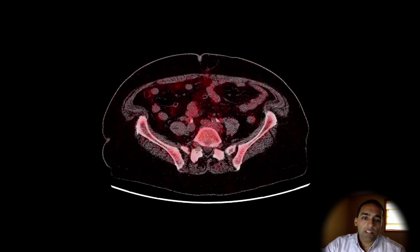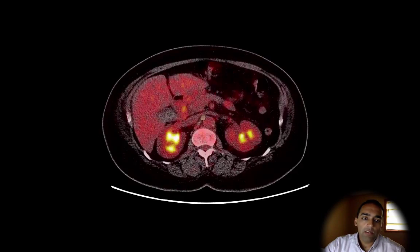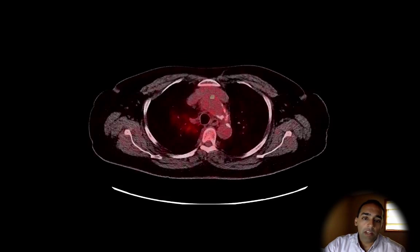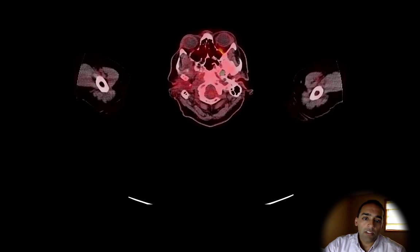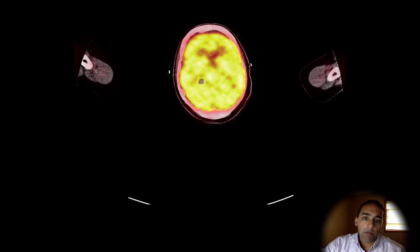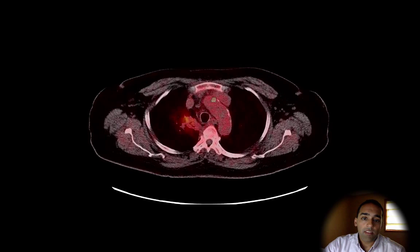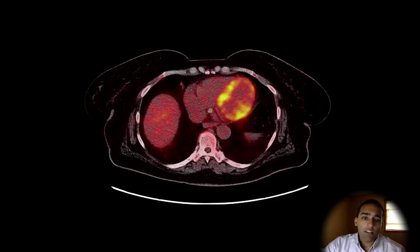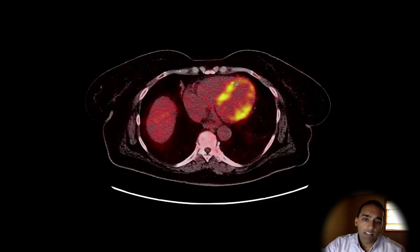So how can I double-check this scan to make sure it makes sense? As I said before, the brain always takes up a lot of glucose. So here I have the brain, and you can see it's lighting up very high, meaning it's taking up a lot of glucose, which makes sense. Another thing to look at is the heart. Here I can see that within the heart muscle, there's a lot of glucose uptake, and that makes sense because the heart never stops working, never stops pumping blood throughout the body as long as we are alive.